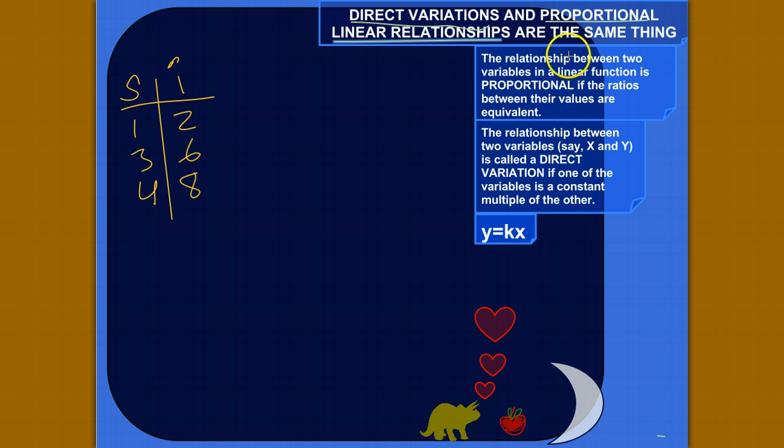So we'd say the relationship between two variables in a linear function is proportional if the ratios between their values are equivalent. A ratio is just a comparison of two numbers, like two to four. Pretend with me that that's a two, okay? Two to four you can write as a fraction. And so a proportional linear relationship would be if the two variables, in this case S and I,